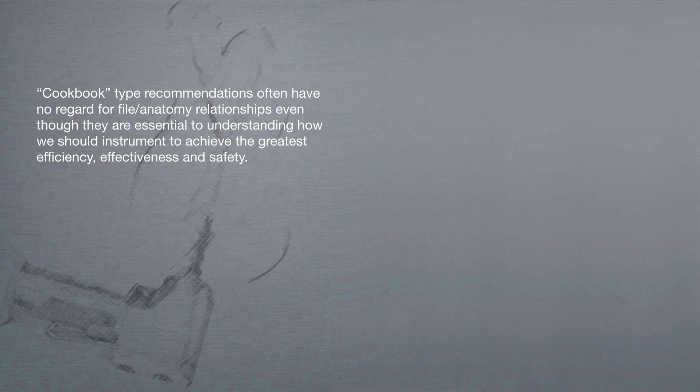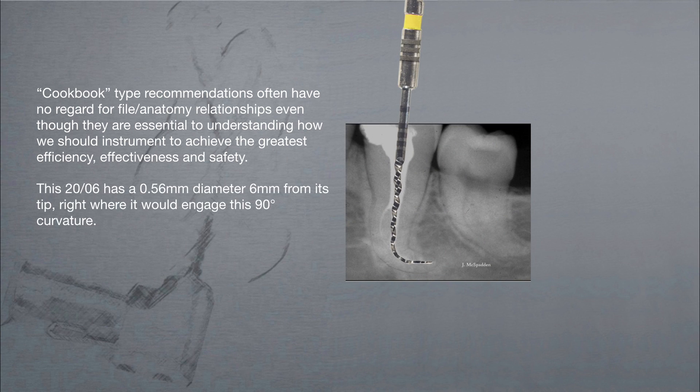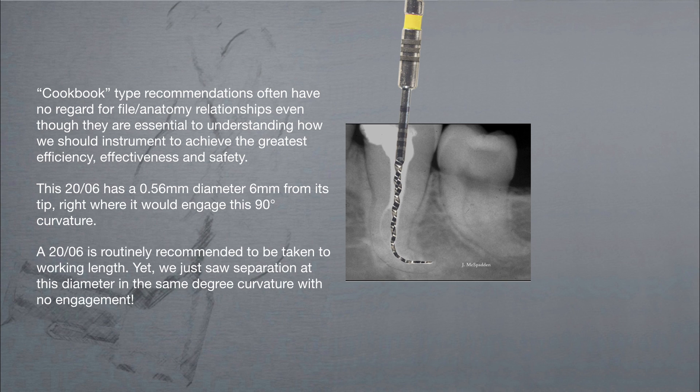Cookbook type recommendations often have no regard for file anatomy relationships, even though they are essential to understanding how we should instrument to achieve the greatest efficiency, effectiveness, and safety. This 2006 has a .56mm diameter 6mm from its tip, right where it would engage this 90 degree curvature. A 2006 is routinely recommended to be taken to working length, yet we just saw separation at this diameter in the same degree curvature with no engagement.